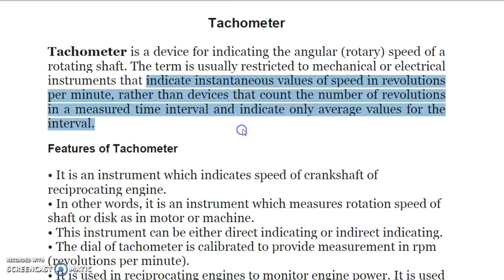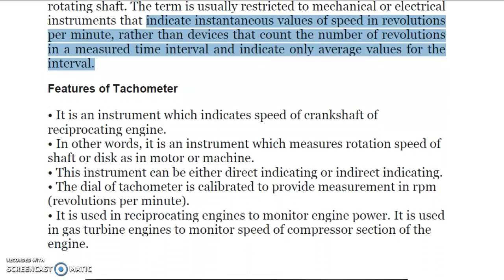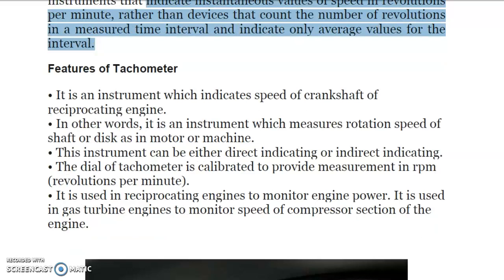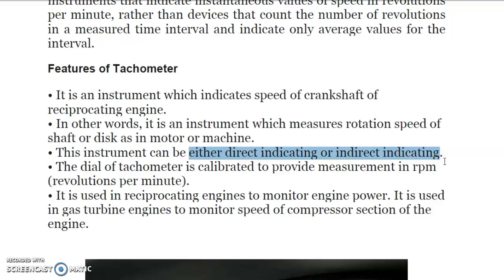Devices that count revolutions in a measured time interval and indicate only average values are not tachometers. The tachometer indicates instantaneous value of speed in revolutions per minute. The features of a tachometer are: it gives the speed of a crankshaft or reciprocating engine, it measures the rotation speed of a shaft or disc in a motor or machine, and the instrument can be either direct indicating or indirect indicating. The dial of a tachometer is calibrated to provide measurement in RPM.